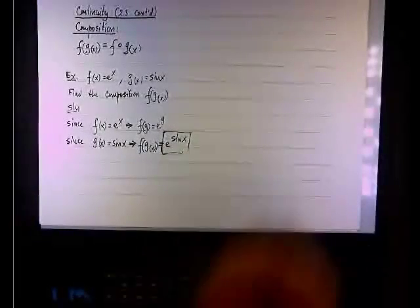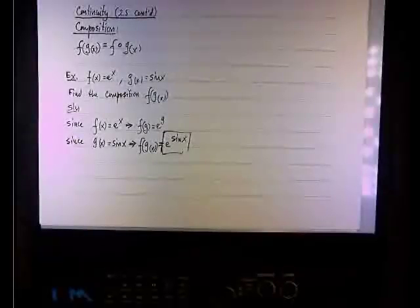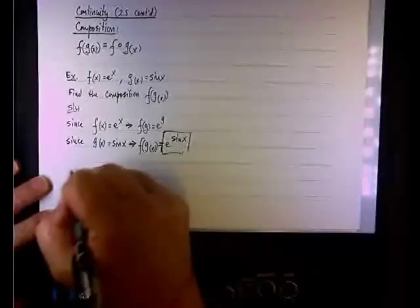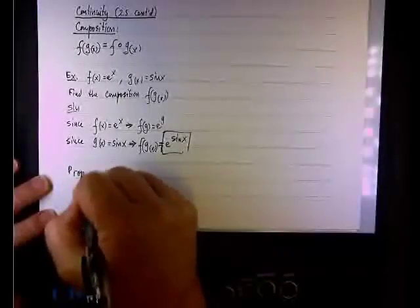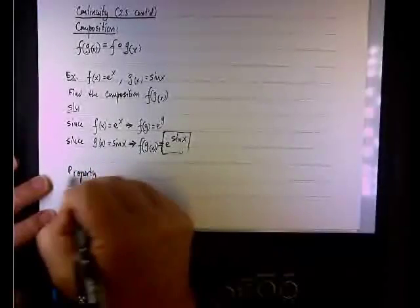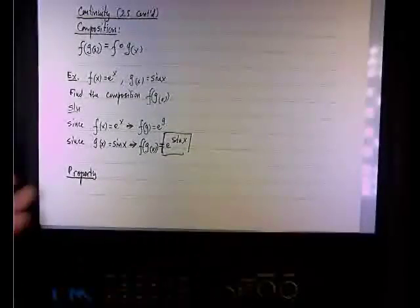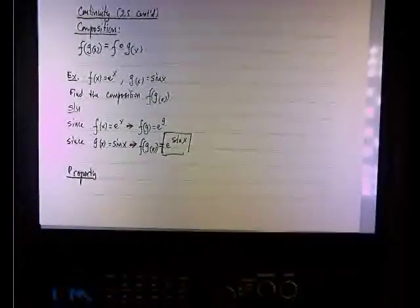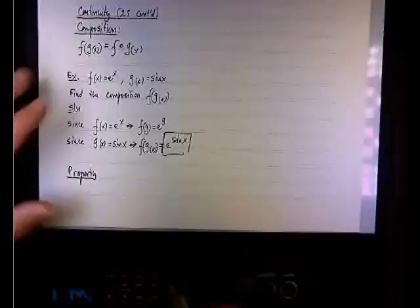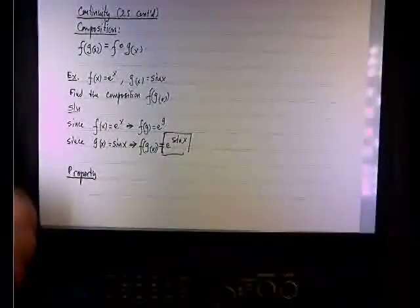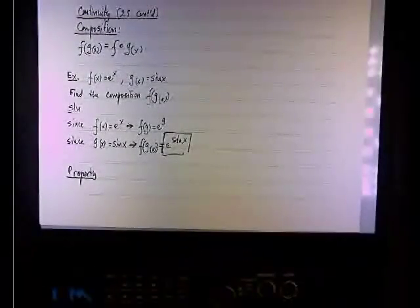It's very simple composition and you've seen this before. Now here's the property in terms of continuity. The property says the following: if f(x) is continuous at x equals b.